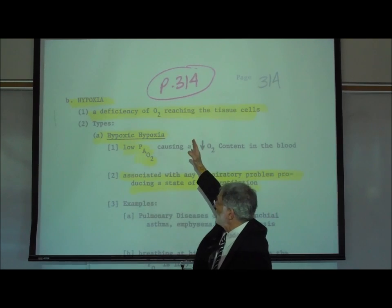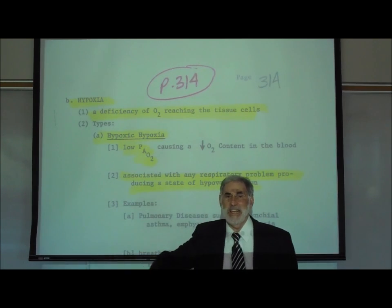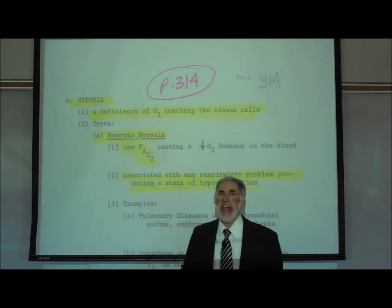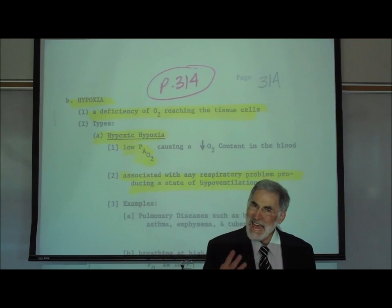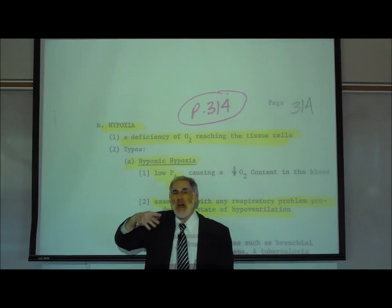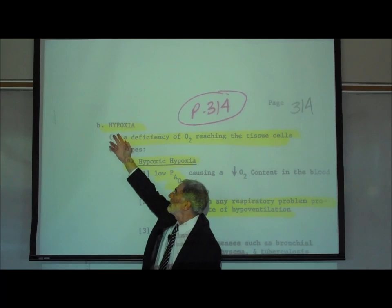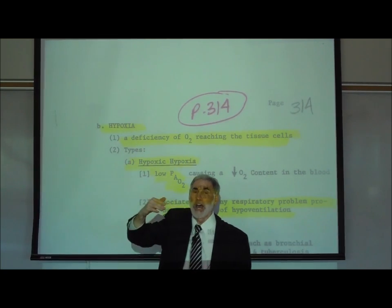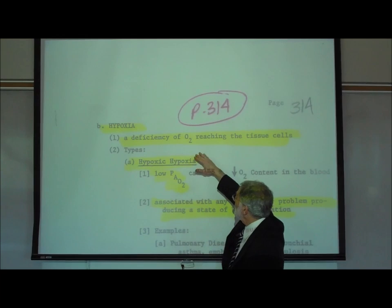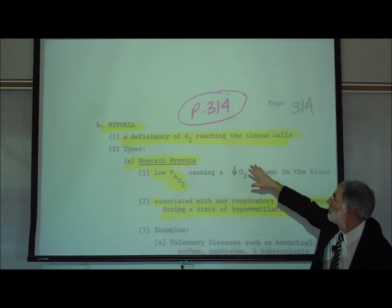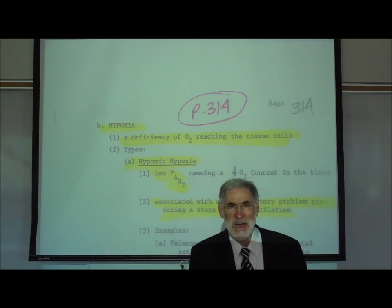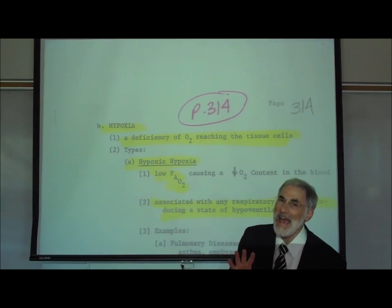This is page 314. We want to describe what hypoxia is and then describe the four categories of hypoxia. The word hypoxia literally means low oxygen. It is a deficiency of oxygen reaching the tissue cells of the body. We divide hypoxia into four categories.